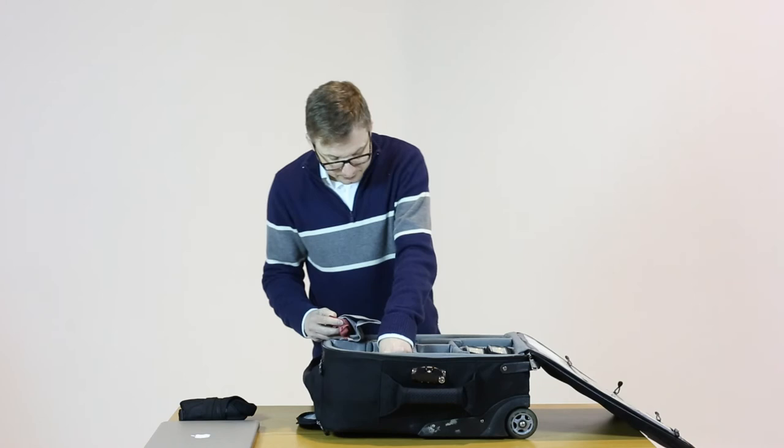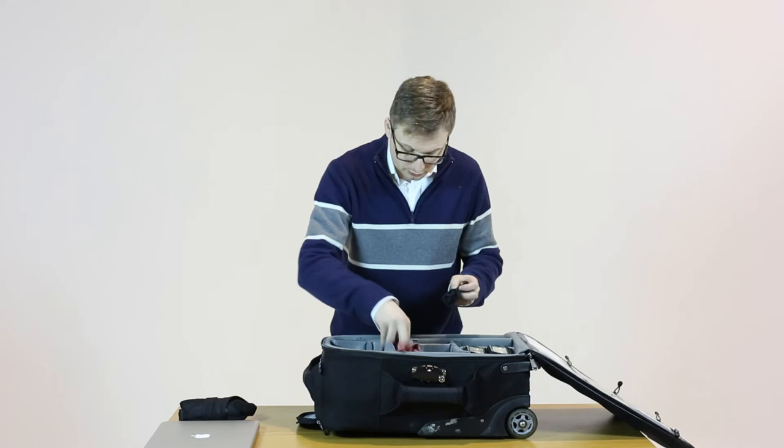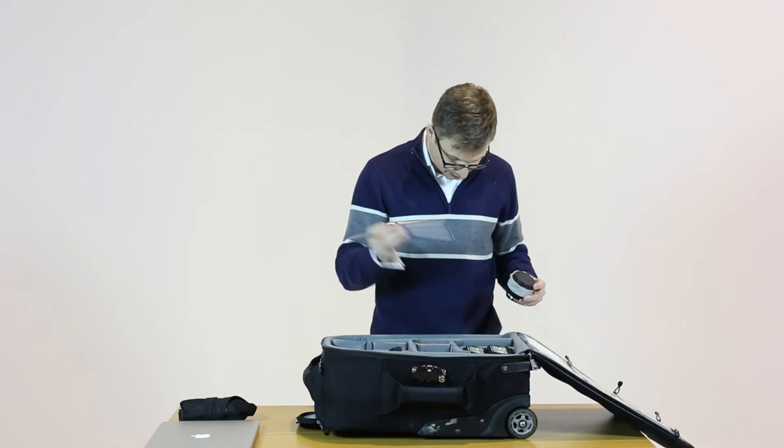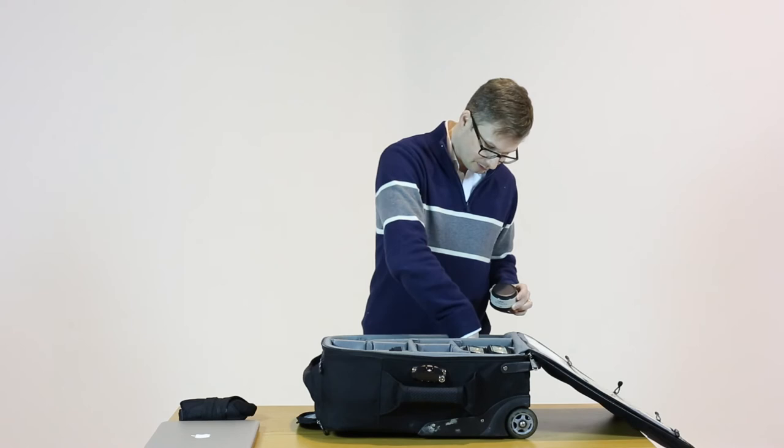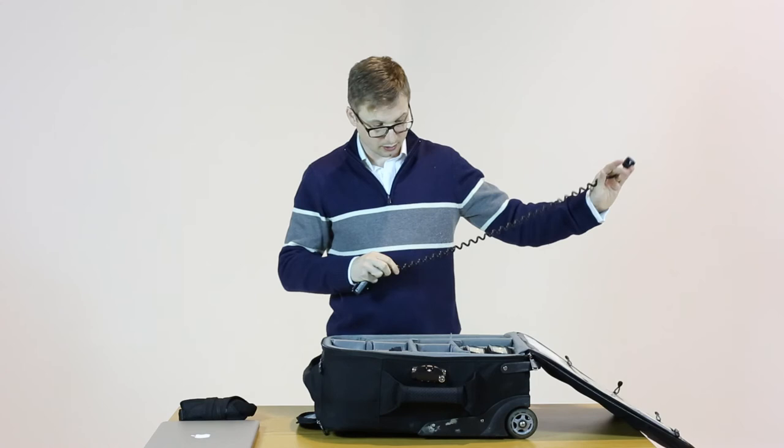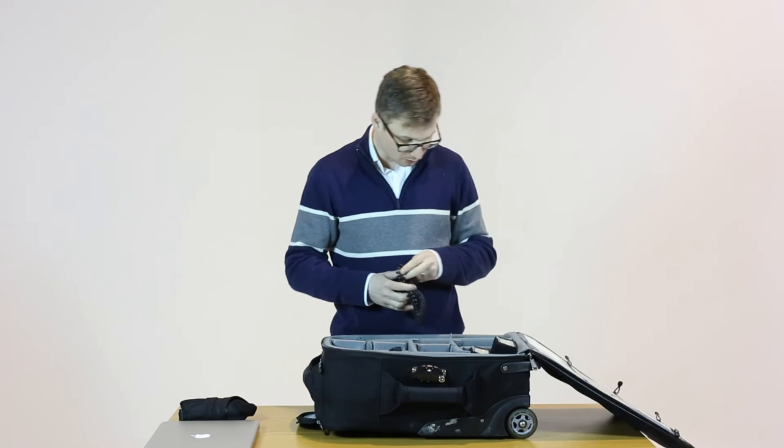What else is in here that you kind of need to know about? Not much. We've got various filters, neutral gradients, lens cleaning kits, dust pickers, a variety of batteries and replacement batteries for the 5Ds. Little extension cords for getting the speed lights off camera and away.